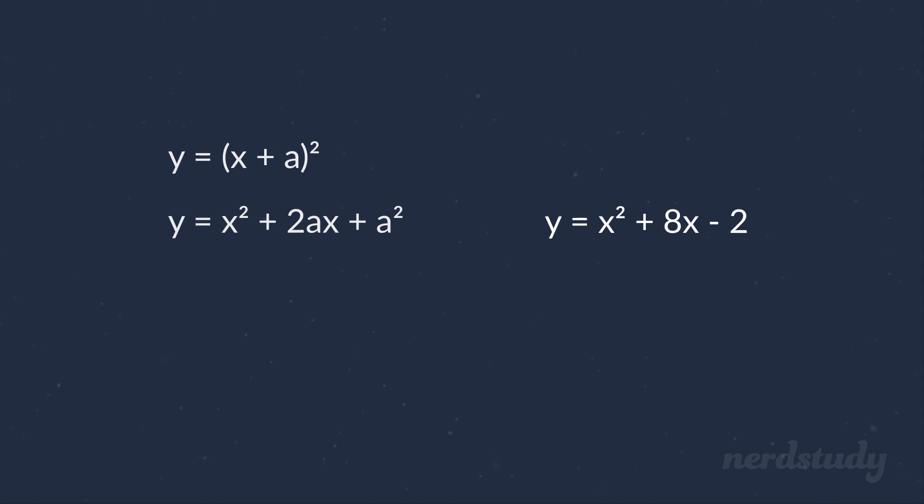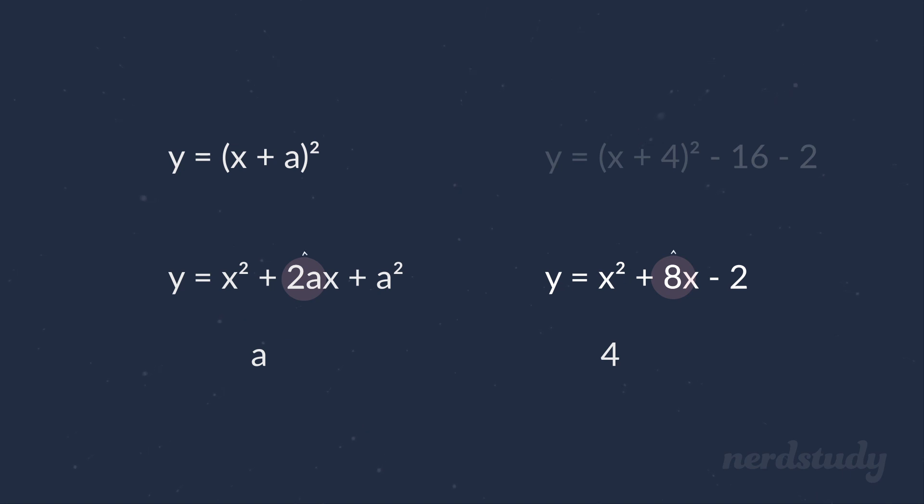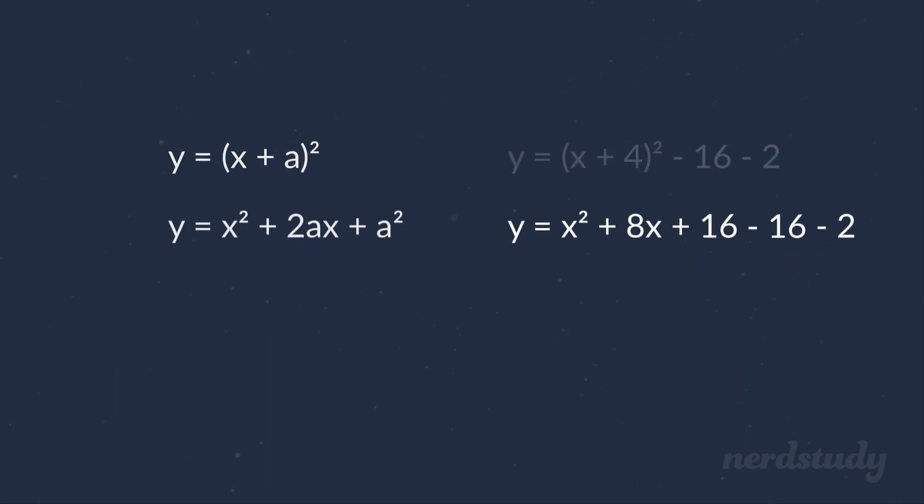Remember, we take this number. We divide it by 2 giving us 4 so that we essentially find out what our a is. And then we square it, giving us 16. So 16 is the number that we will need to add and subtract by in order to make this segment a perfect square trinomial.